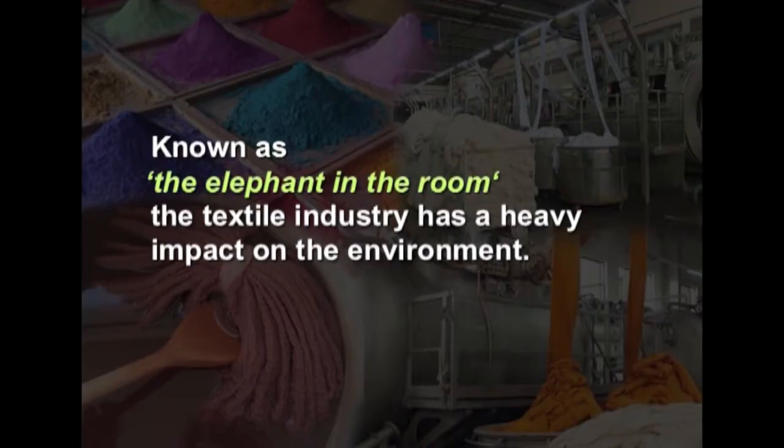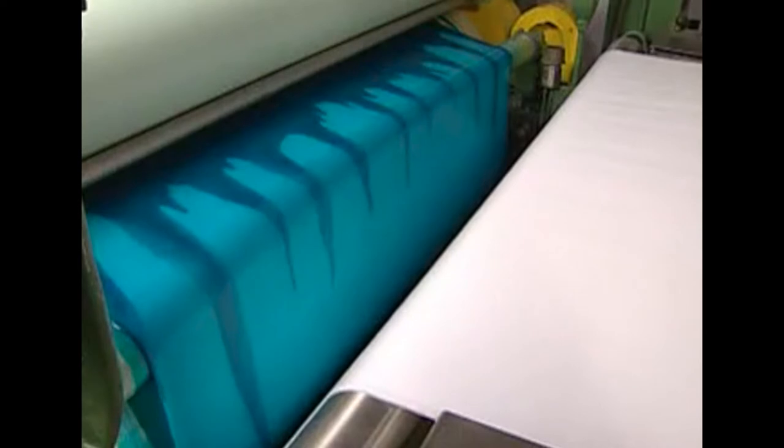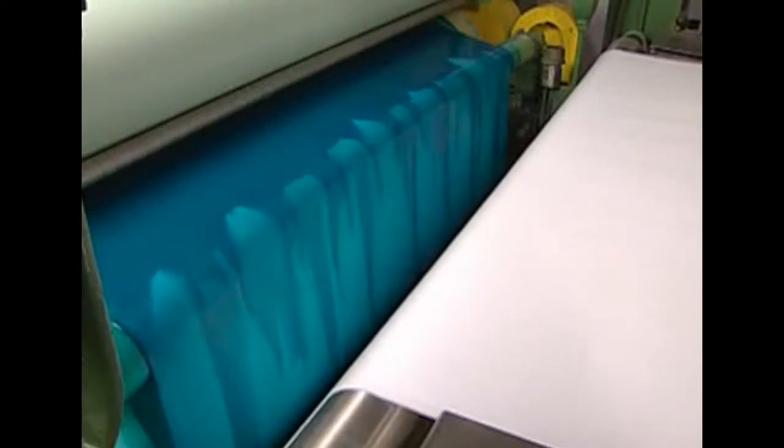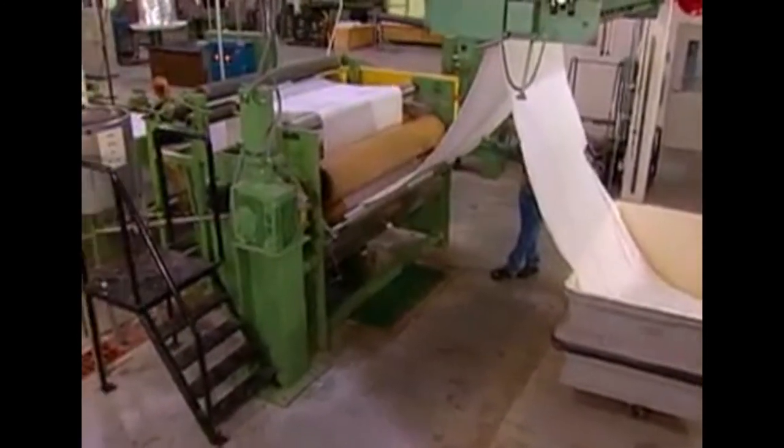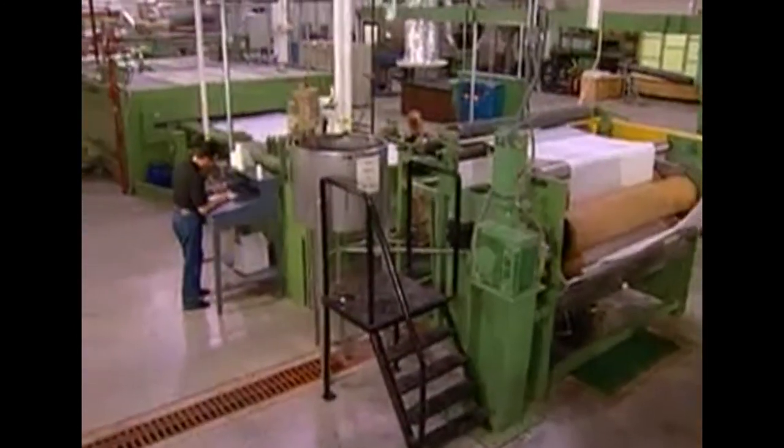The world is in the age of environmental and ecological consciousness. Environmental pollution is gaining importance as one of the most challenging problems facing the human race. Known as the elephant in the room, the textile industry has a heavy impact on the environment. Every year, 1 million tons of different types of chemical dyes are used across the globe. The dyeing and bleaching of fabrics involve chemicals, energy, and huge amounts of water.